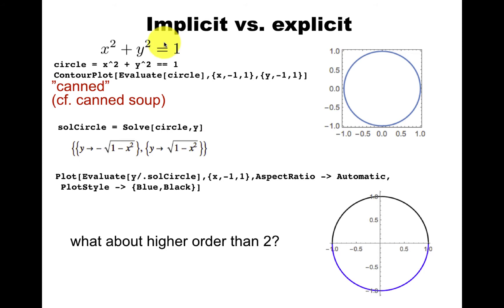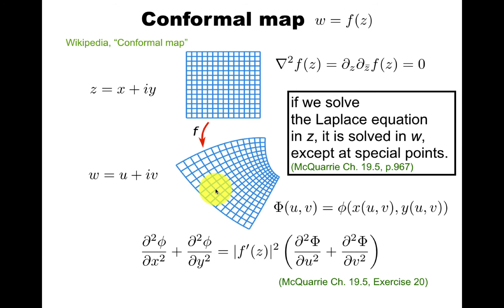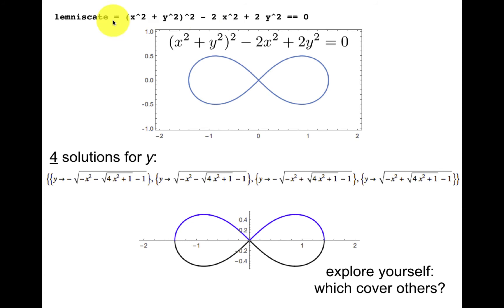Now, the circle is very special. It has lots of symmetry. It's only a quadratic equation. What happens if you go to a higher order than two in this implicit versus explicit question? And before I go on, this is important when we solve the Laplace equation in the z or the w coordinate in the conformal map, because the streamline here in the z plane will map to some streamline in the w plane. And an example of that is this quartic equation.